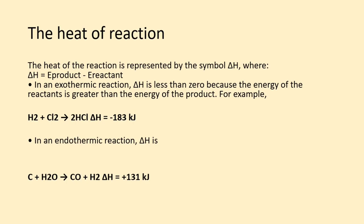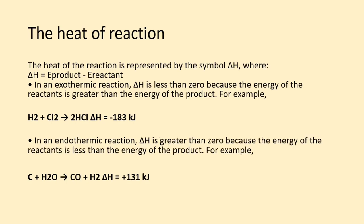In an endothermic reaction, delta H is greater than zero because the energy of the reactants is less than the energy of the product. For example, C + H2O → CO + H2, ΔH = +131 kJ.